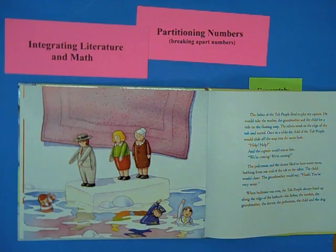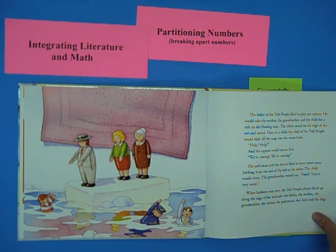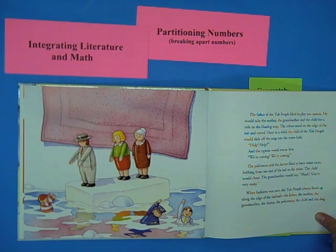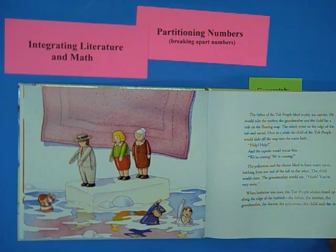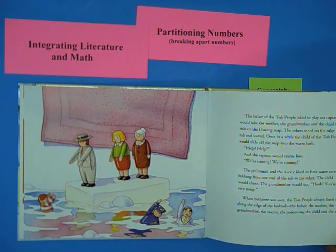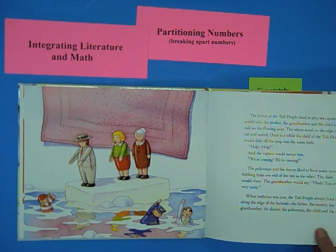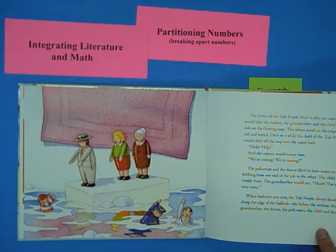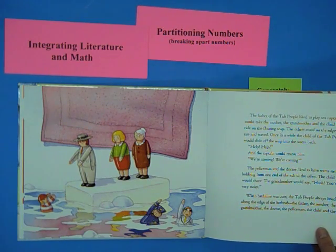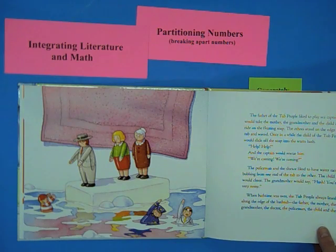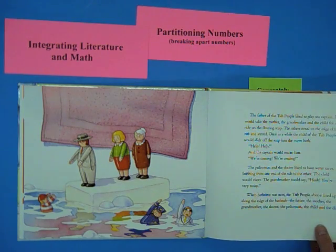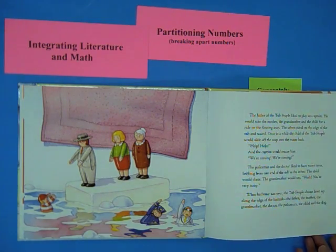The father of the tub people liked to play sea captain. He would take the mother, the grandmother, and the child for a ride on the floating soap. And the others stood at the edge of the tub and waved. Once in a while, the child of the tub people would slide off the soap into the warm bath. Help! Help! And the captain would rescue him. We're coming! We're coming! And the policeman and the doctor liked to have water races bobbing from one end of the tub to the other. And the child would always cheer. The grandmother would say, Hush! You're very noisy.